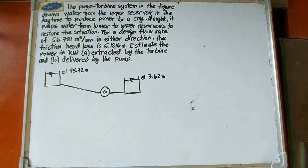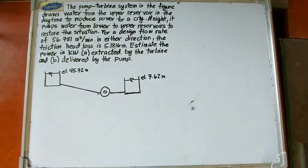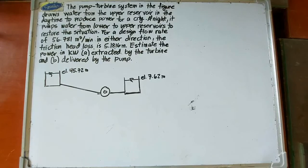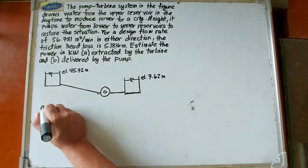We have a pump-turbine machine here, although this doesn't really exist in reality. Just to illustrate how the energy equation works, let's assume such equipment exists. For letter A, we estimate the power extracted by the turbine — the power generated by the turbine during daytime.